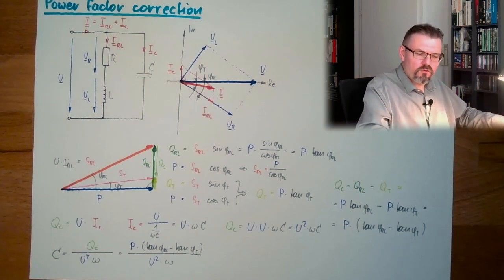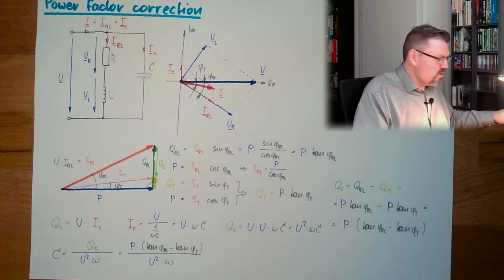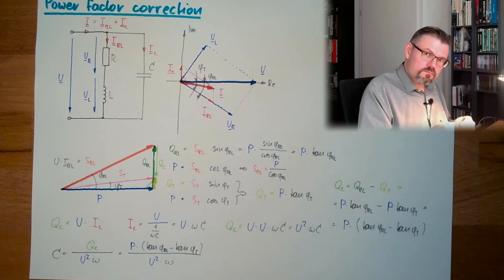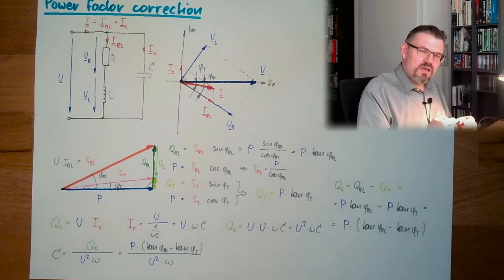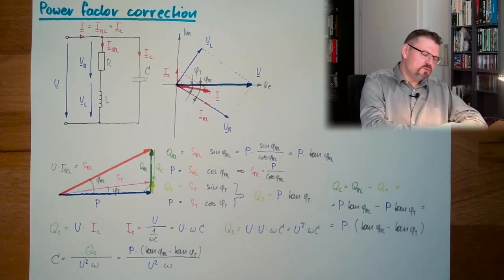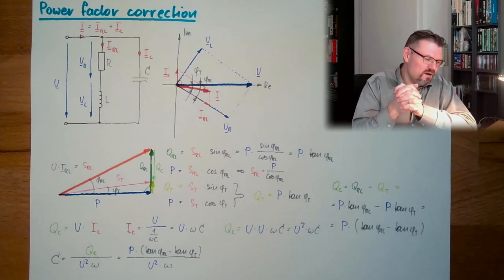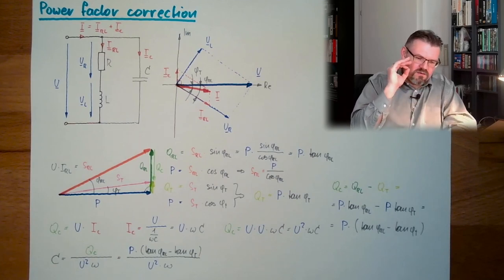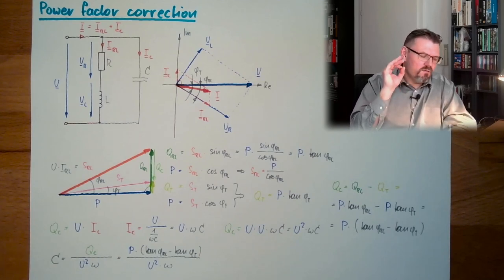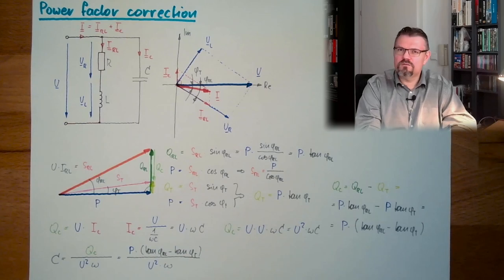Of course, you could say my target phi is zero, then this would also lead to the correct value, whatever you like. It's not always recommended to go to zero. Sometimes you want to stay a little bit in one direction. This depends a little bit on the situation in the network. So this is why I said there must be a target phi, a total phi, a target phi must be there, so that we can easily calculate our needed capacitor for correcting our power factor to a more pleasant situation for our network. And now our network operator is satisfied.